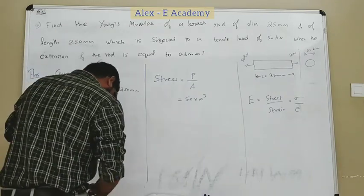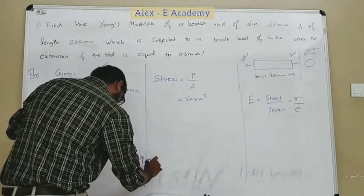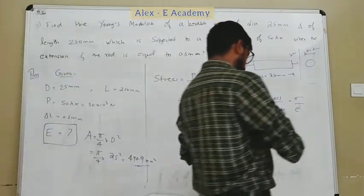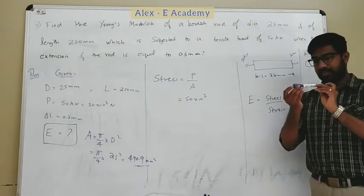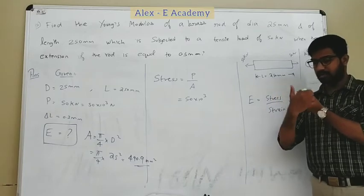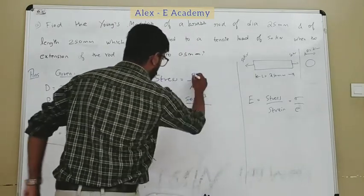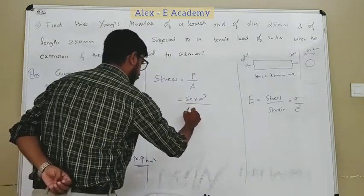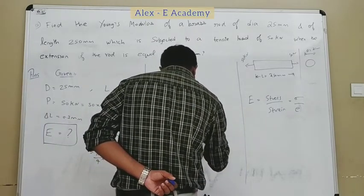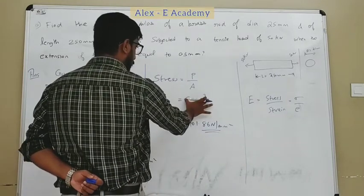The cross-sectional area is equal to 490.9 mm². Stress is equal to load divided by area: 50,000 divided by 490.9, so stress will be equal to 101.86 N per mm².